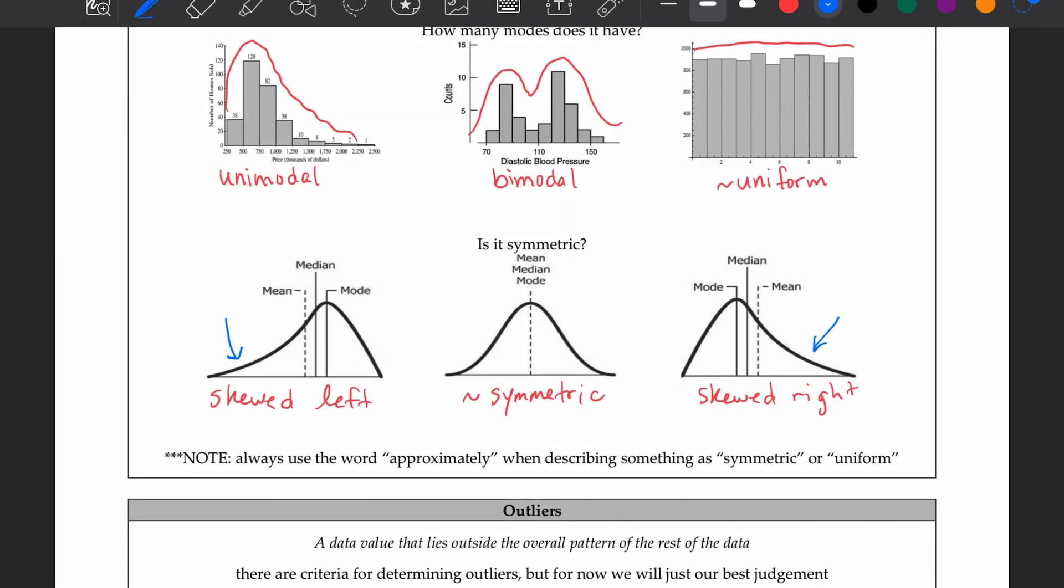The last little nugget on this front side is about outliers. I think a lot of us know what outliers are, so I won't go too much into it. Outliers are things that deviate from the overall pattern. There are criteria for determining outliers that we'll get into in a future video. For now, you're just using your best judgment. You can even cover yourself by saying there appears to be an outlier at blah, so you're not saying it definitively since right now we're just using best judgment.